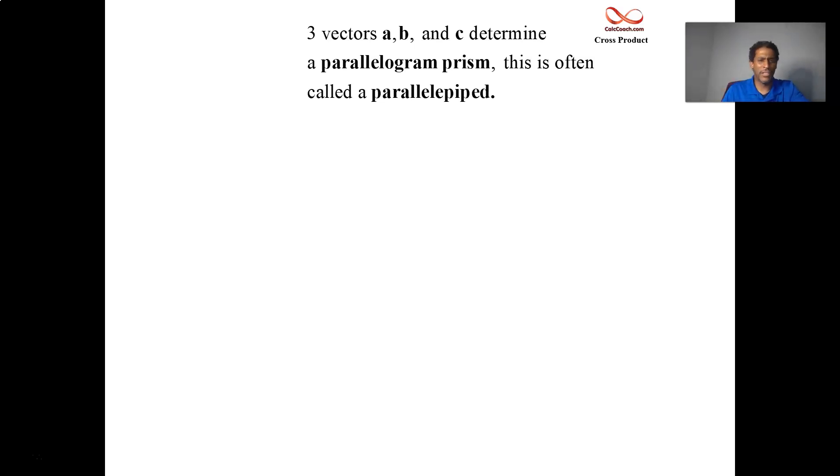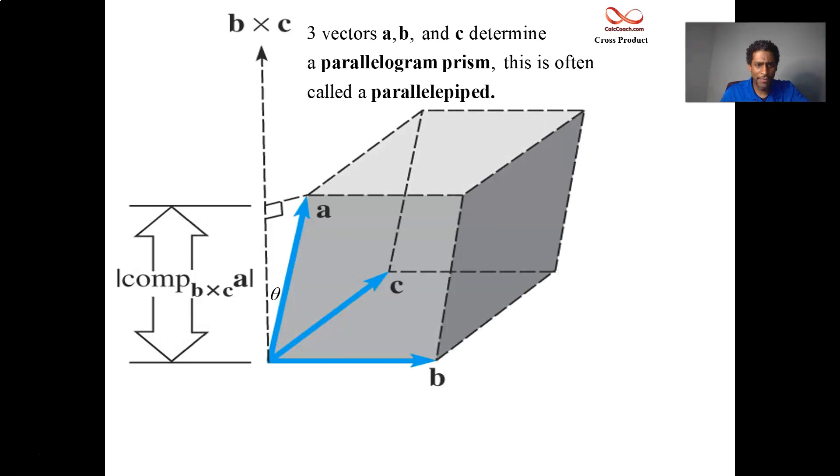All right, let's take a look at it. So three vectors a, b, and c, they form this three-dimensional shape where you have a prism of parallelograms.